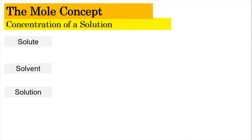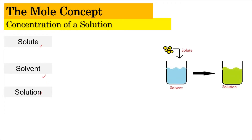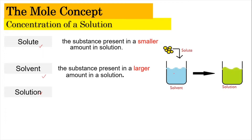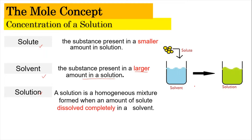Before we go straight into the representation of concentration, we need to understand what a solution is. A solution basically consists of a solute, a solvent, and the solution itself. A solute is a substance present in a smaller amount in a solution. The solvent helps to dissolve the solute and is usually present in a larger amount. Mixing the solute inside the solvent produces a solution, which is a homogeneous mixture — usually a clear solution — when the solute dissolves completely in the solvent.